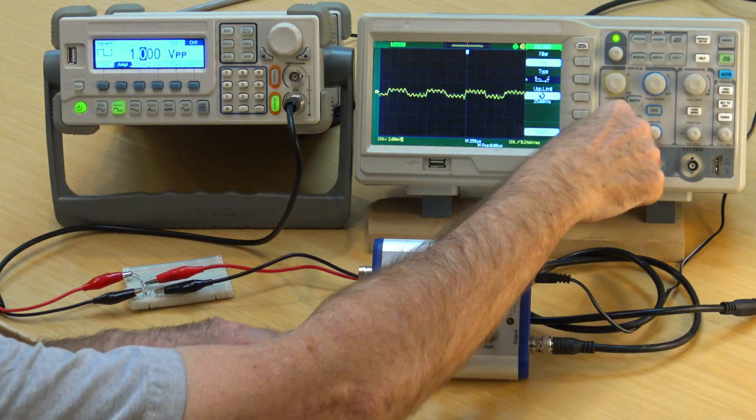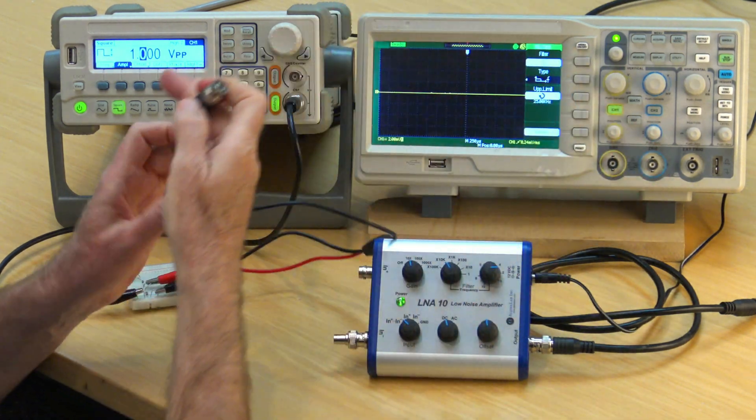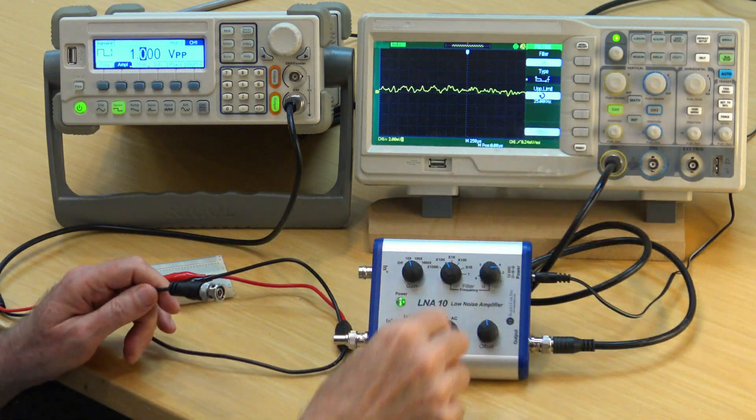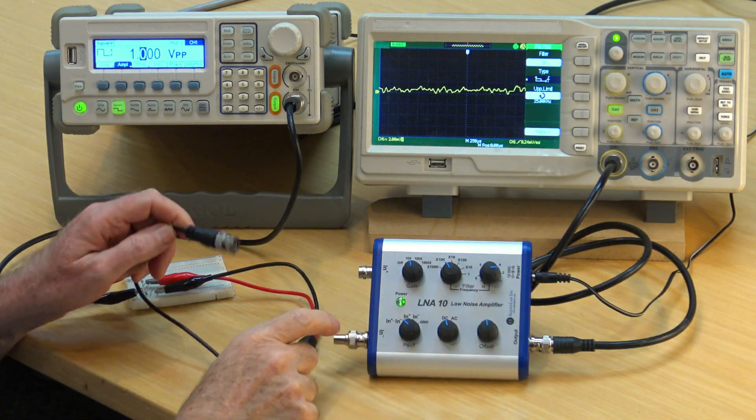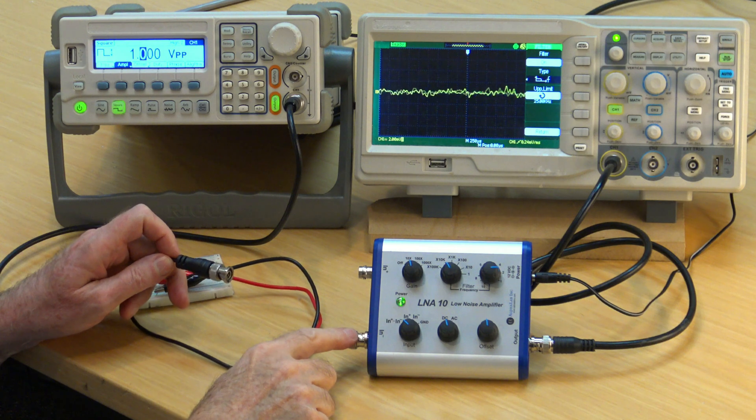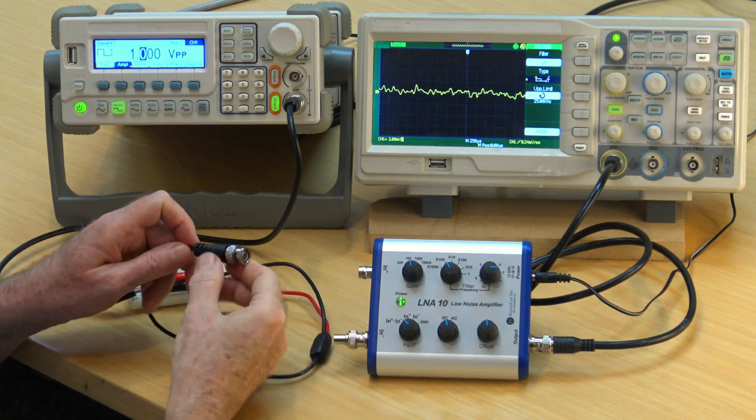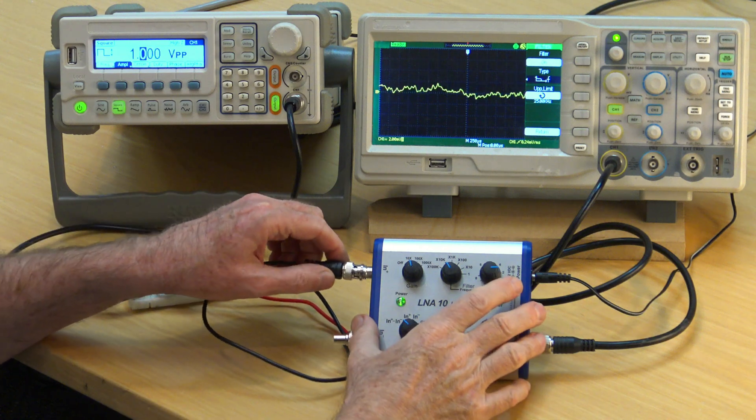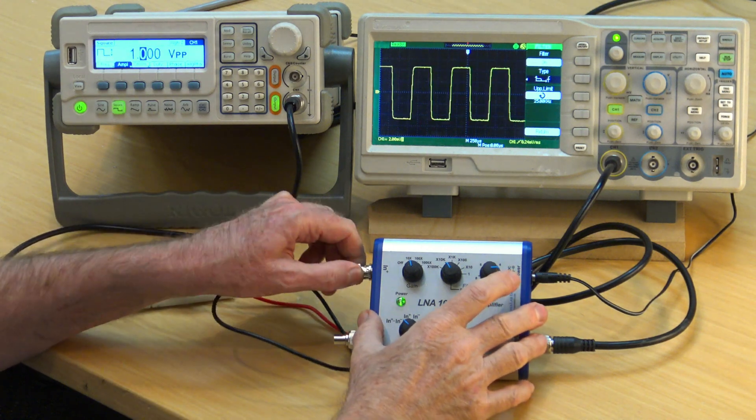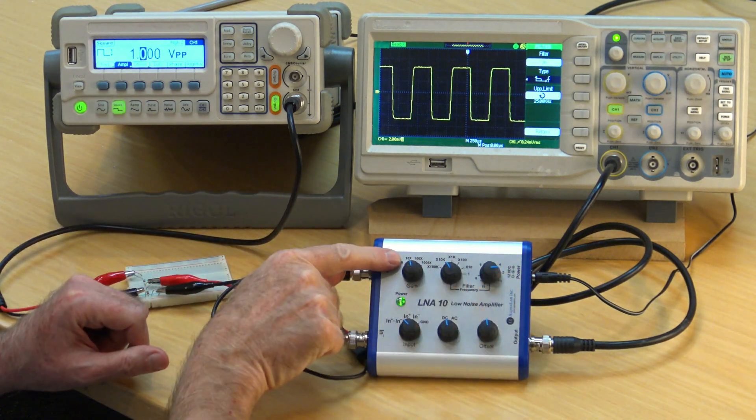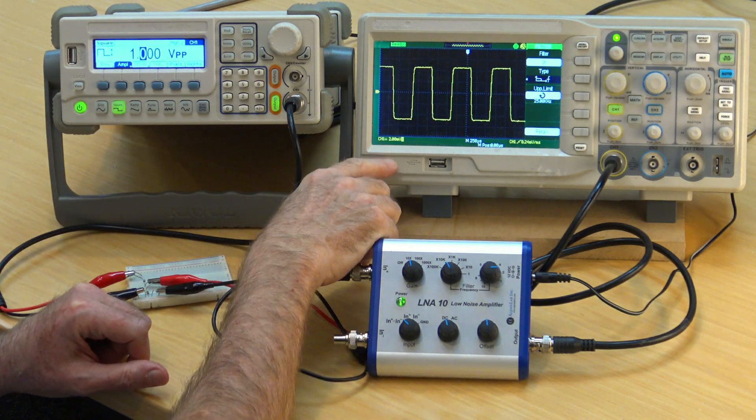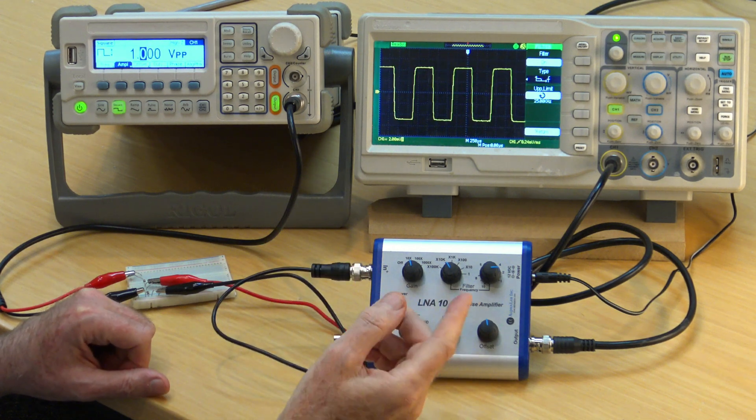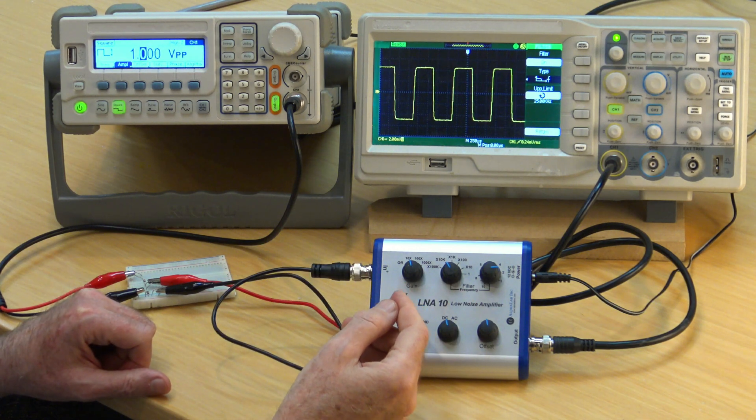Now I'll connect the LNA 10 differential amplifier. It's usually used as a differential probe. There are two amplifiers and the negative amplifier is shunted for a differential probe. Then any standard BNC cable can be used as the input which connects to the positive amplifier. I will amplify this one millivolt peak to peak signal by a factor of 10 in differential mode. Clearly it's much cleaner because the common mode noise is gone.